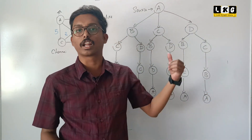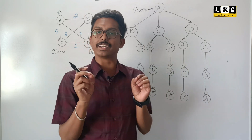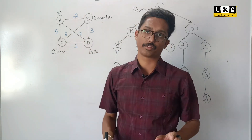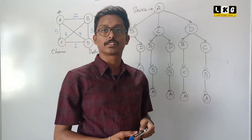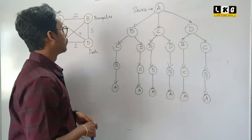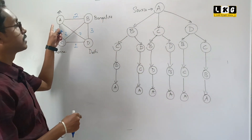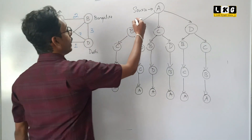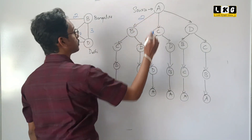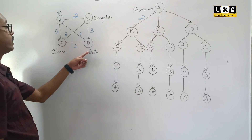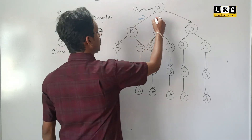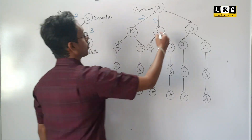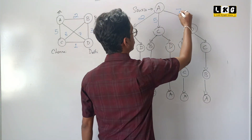That's it. This is the traveling salesman problem. The only thing left is we need to add the cost by looking at this graph. Now let us add the cost. What is the cost from A to B? A to B, the cost is 2. What is the cost from A to C? A to C, the cost is 5. What is the cost from A to D? A to D, the direct cost is 7.